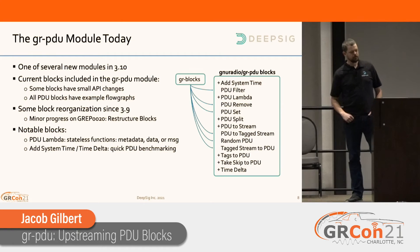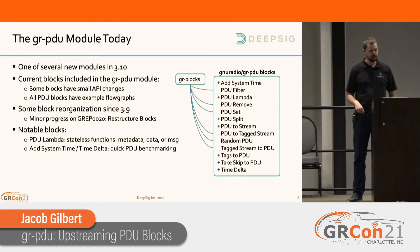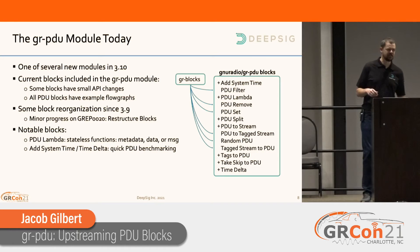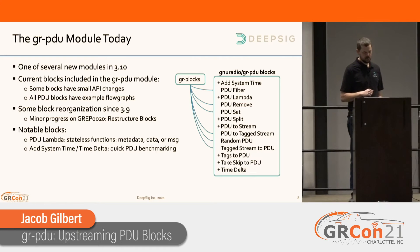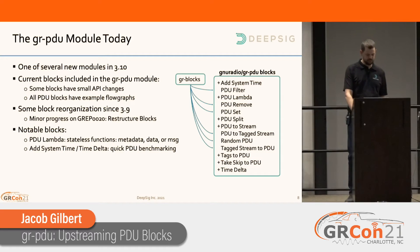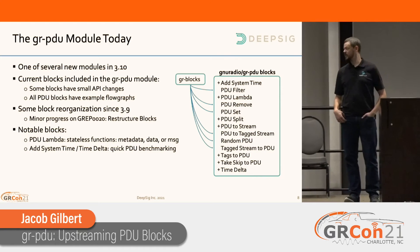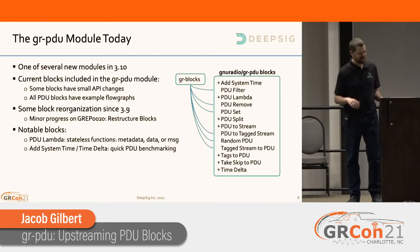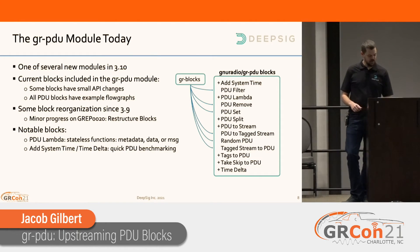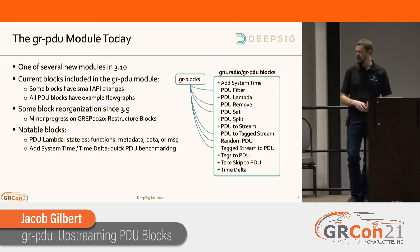Looking at the module today - we've moved a number of blocks out of GR blocks, the great catch-all, and into GR PDU, which are shown here. There's some reorganization and quite a few blocks have been added. The PDU Lambda block is now in-tree, which allows you to feed it an arbitrary function and it'll just do that function on all of your data. There are also some examples in-tree now that cover all of the blocks that have been added.